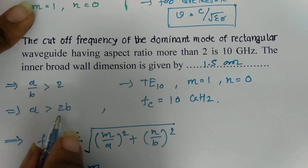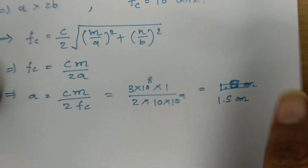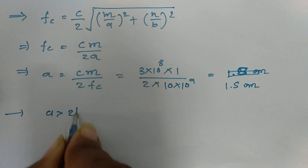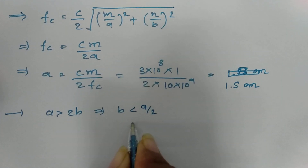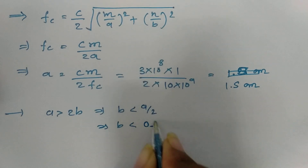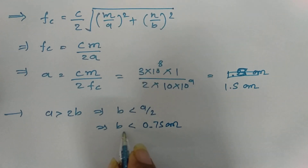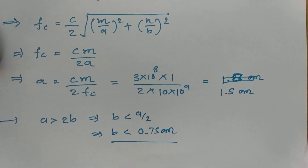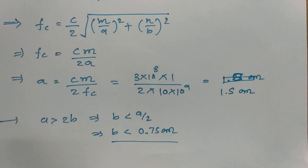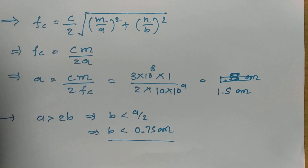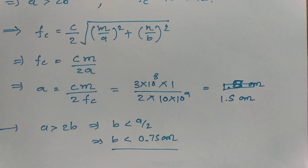For dimension B: since A/B > 2, we have A > 2B, so B < A/2 = 0.75 cm. Therefore B must be less than 0.75 cm. In the next video, I will be explaining examples from previous GATE examinations as well as DRDO entrance examinations to help understand how to solve waveguide problems. Thank you for watching.